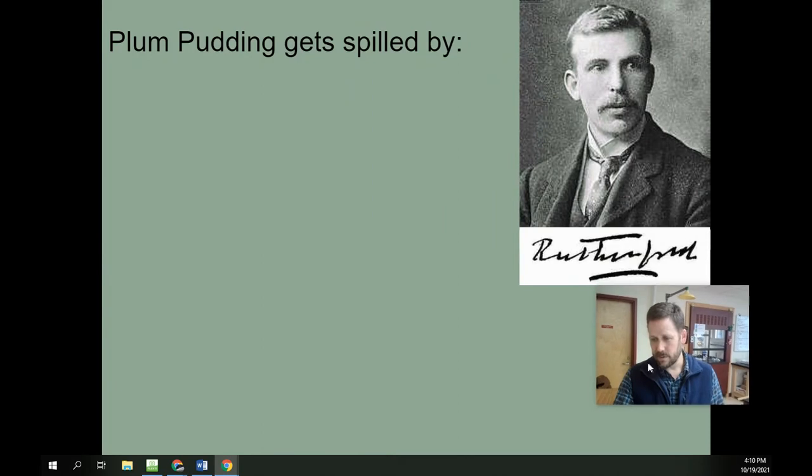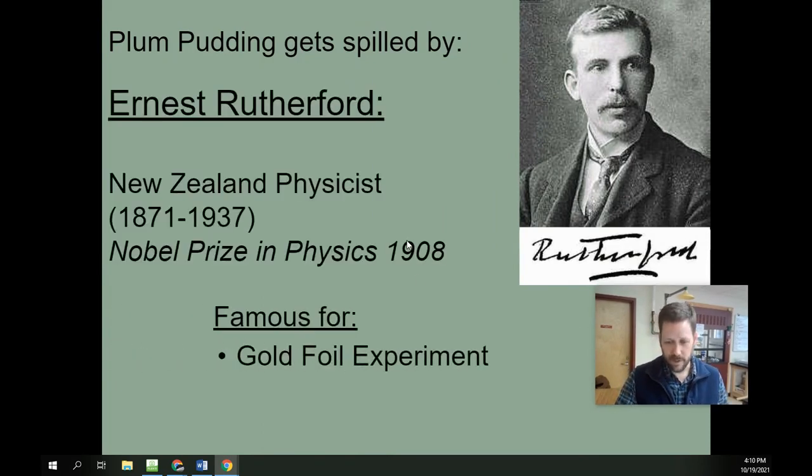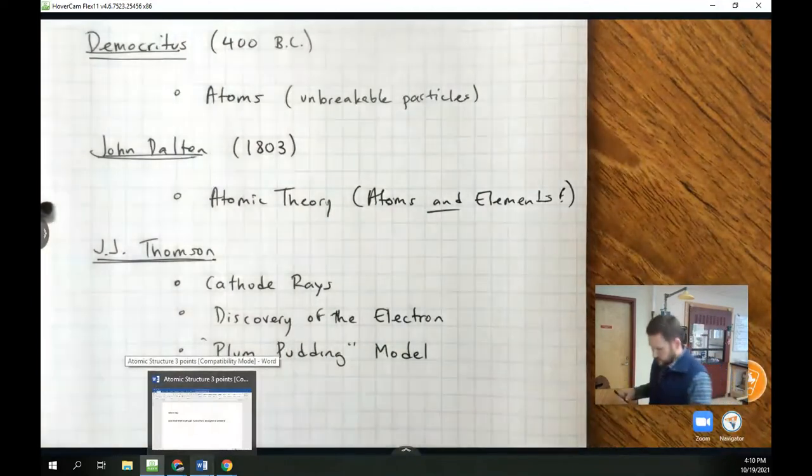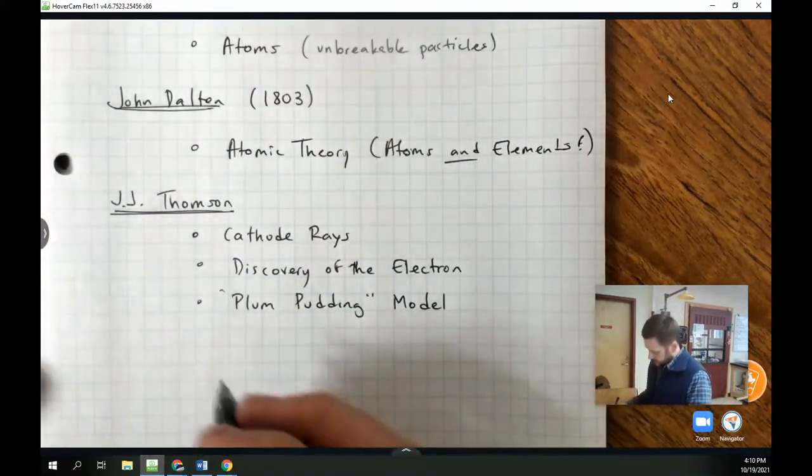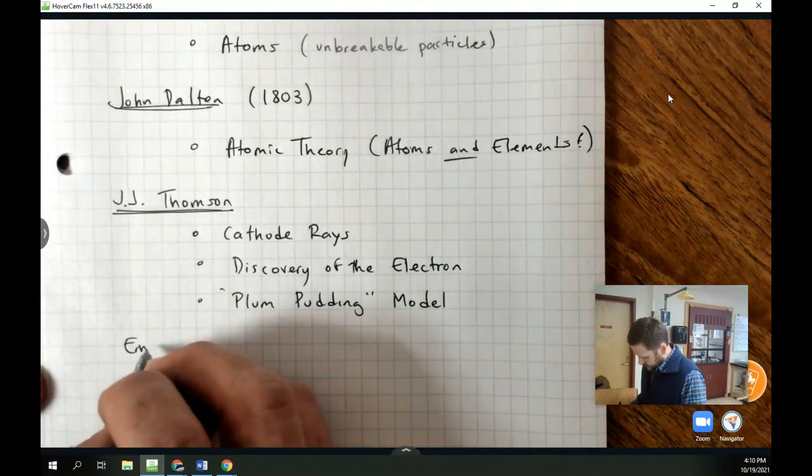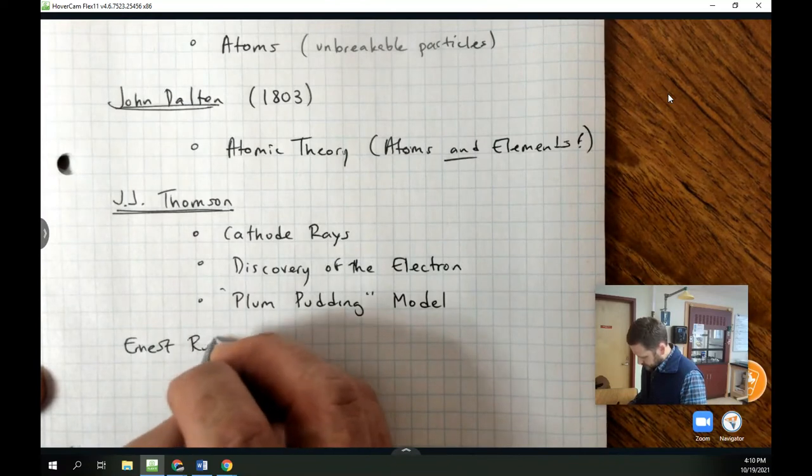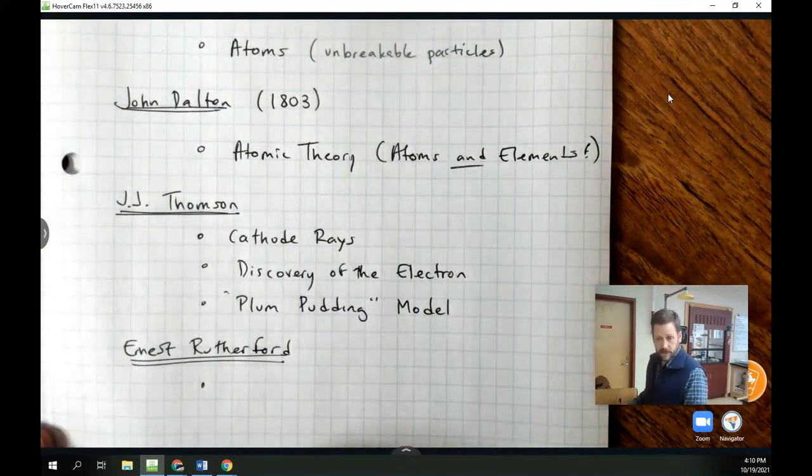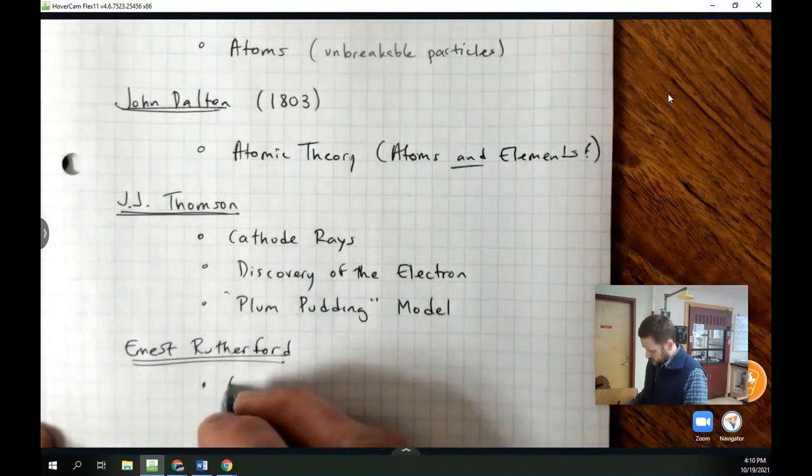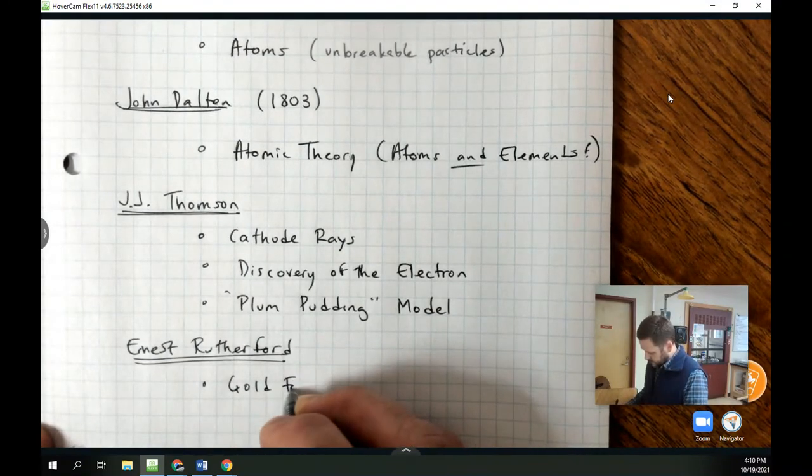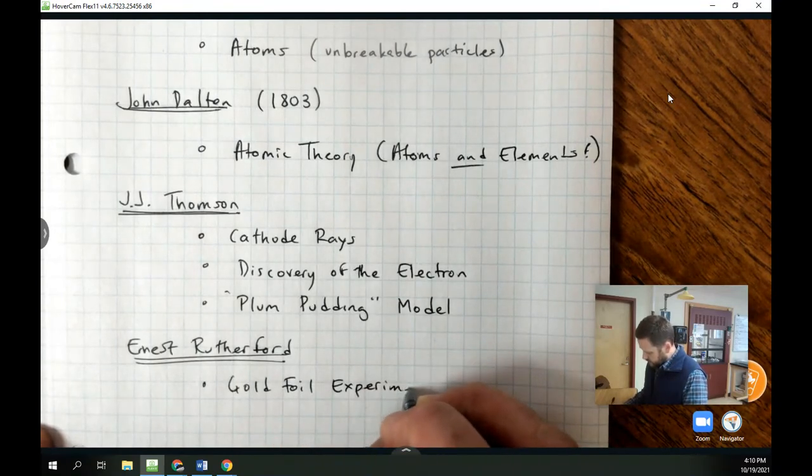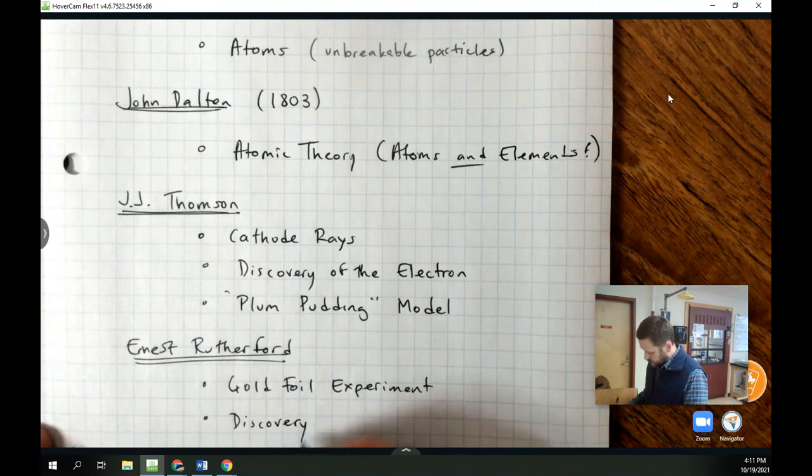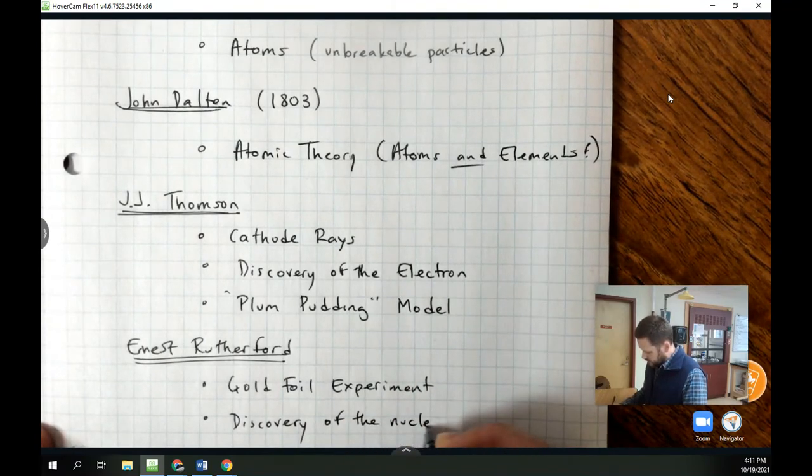It was actually his student, named Ernest Rutherford, who is credited with the discovery of the nucleus. So we're going to put this in our notes next. Let's talk about Ernest Rutherford, and Ernest Rutherford was actually a New Zealander and was a student of Thomson's, and he is credited with the discovery of the nucleus, which he discovered by conducting a very famous experiment known as the gold foil experiment. And we'll need to explain that in a moment. And the discovery of the nucleus is what he is credited with and what's associated with this experiment.